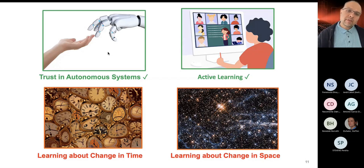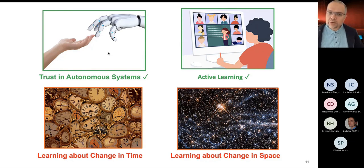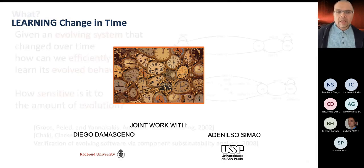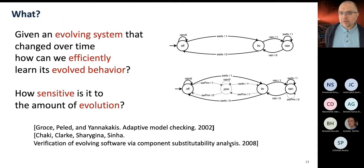Now we developed this idea in very different directions and two directions that I will be talking about is about evolving systems that change in time and evolving systems that change in space, meaning that they have various different types of features that could be added or removed or modified in the system. So let's talk about evolution in time. This is joint work with Diego who is here and you could ask all the difficult questions to him. He is a postdoc now at Radboud University in Nijmegen in the Netherlands, and Adnilson Simao who is a very good colleague at the University of Sao Paulo in Brazil.